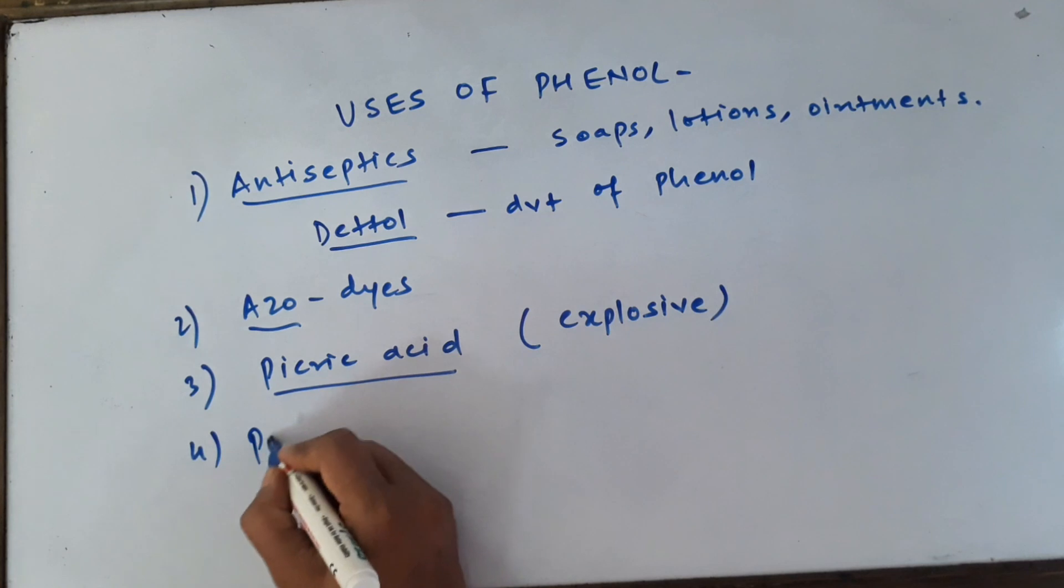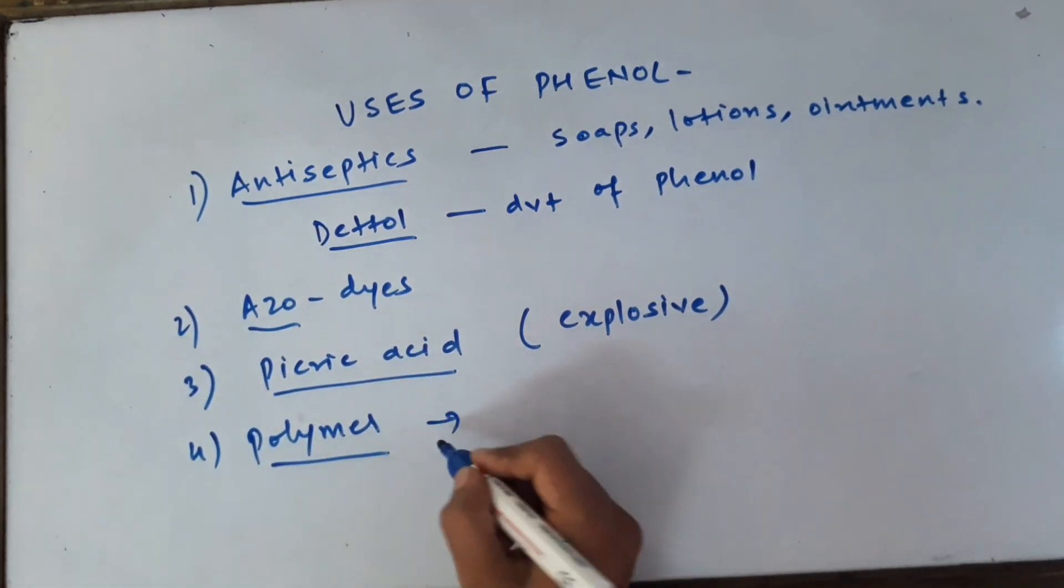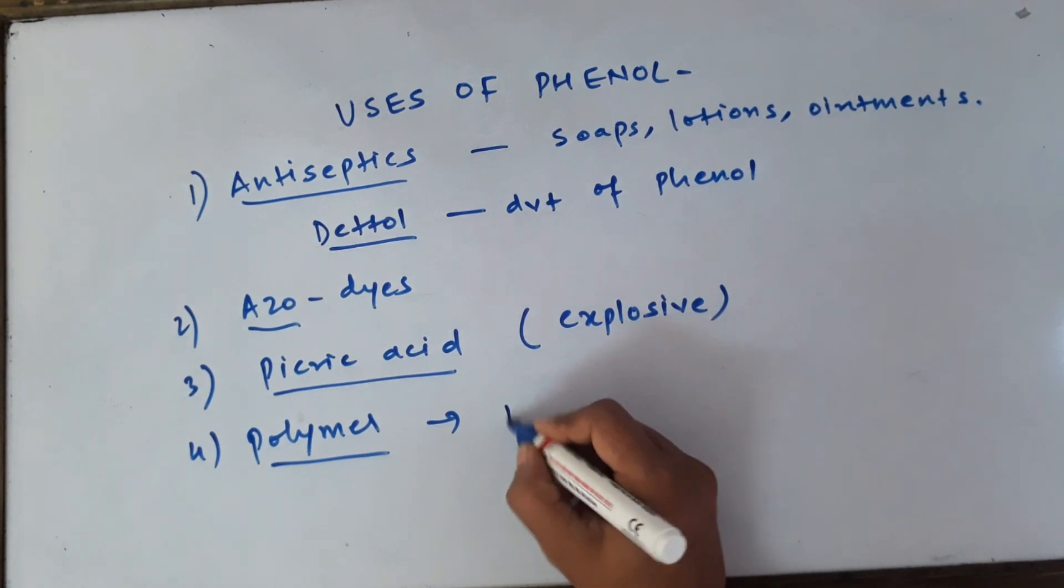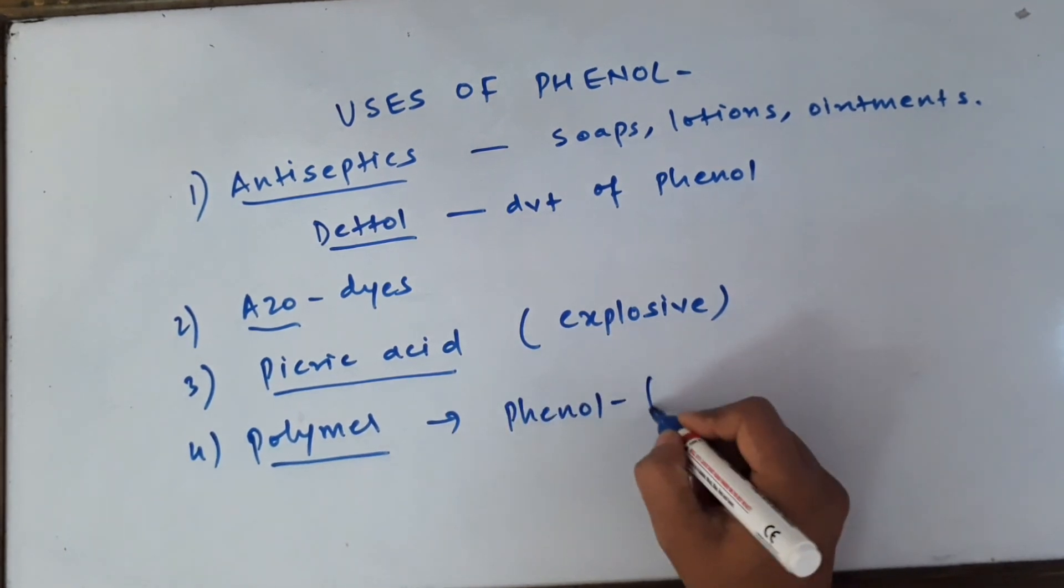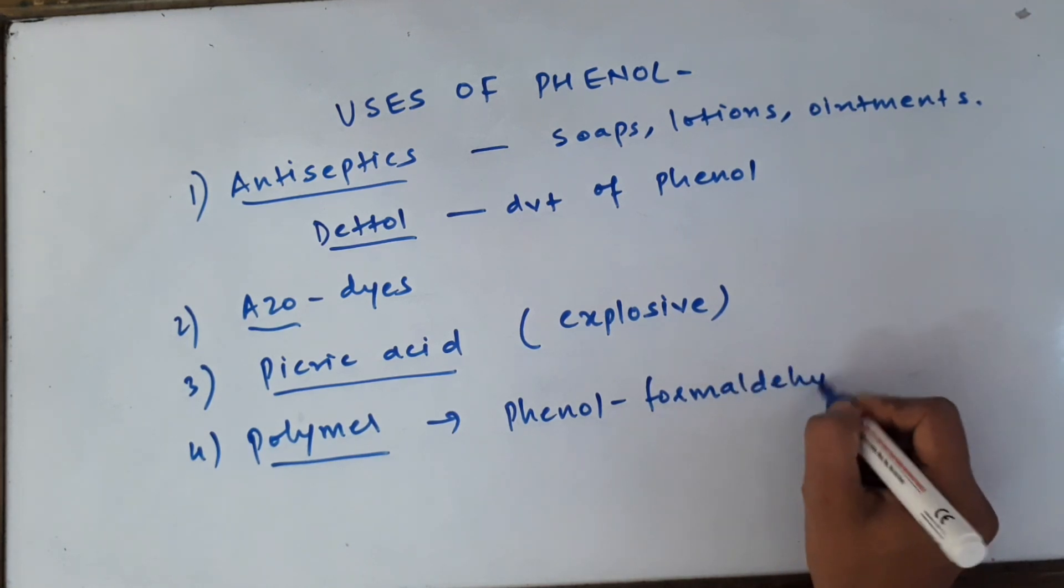The fourth use of phenol which we can see is in the chapter of polymers which we have already seen or some of you may see later. It is used for the synthesis of some important polymers like phenol-formaldehyde resin.